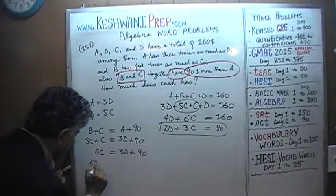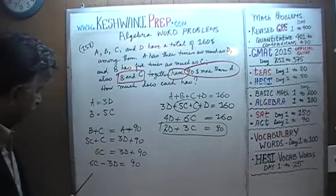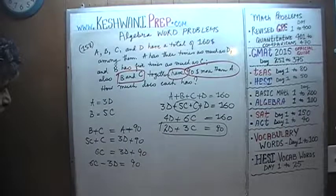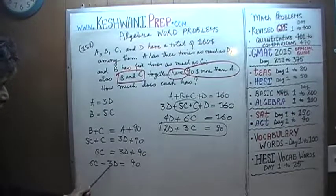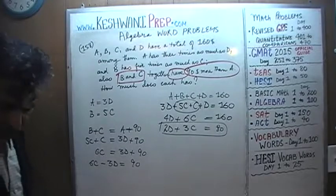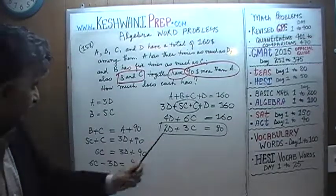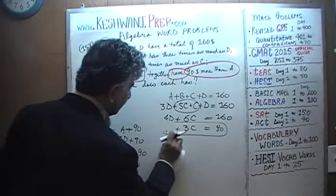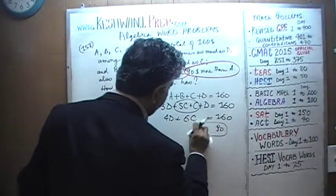Bringing 3D to the left side gives us 6C − 3D = 90. Now, rather than dividing by 3 here, let's leave this equation as is. We notice we have 6C in both equations, so we can subtract one from the other to eliminate the 6C terms. Let's erase the earlier simplification step — it's better to leave it as 4D + 6C = 160 and 6C − 3D = 90.